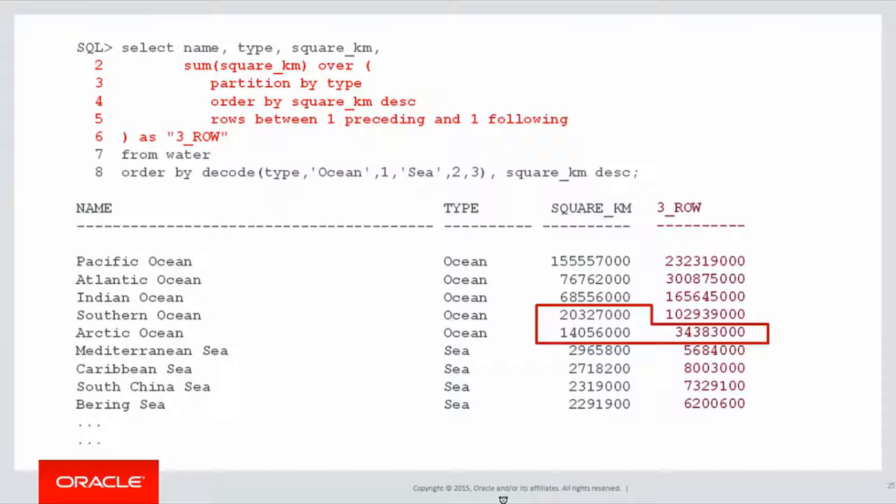So for the Arctic Ocean, being the last ocean, it has the current row, it has the preceding row, but there is no following row. So just like the Pacific Ocean had no preceding row, the Arctic Ocean had no following row, and therefore we get the 34 million. That's the partition range there, highlighted in blue.